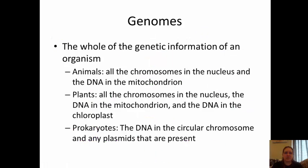Moving on to genomes — the whole of the genetic information of an organism is considered its genome. In animals, this includes all chromosomes in the nucleus plus the DNA in the mitochondria. In plants, it includes chromosomes in the nucleus, mitochondrial DNA, and DNA in the chloroplasts. In prokaryotes, it's the DNA in the circular chromosome, and sometimes prokaryotic cells have plasmids, so any DNA in plasmids would also be part of the genome.